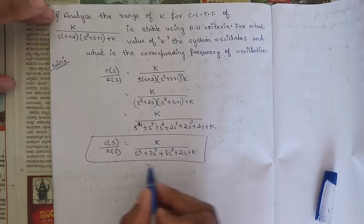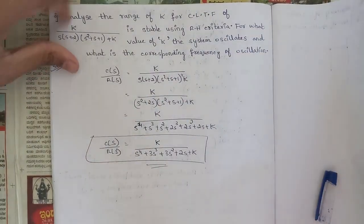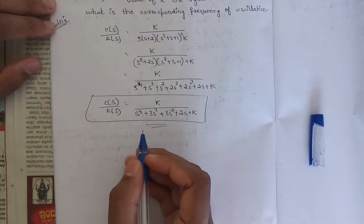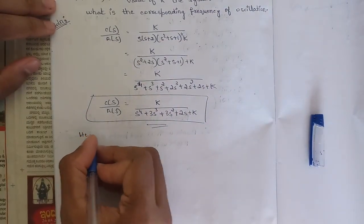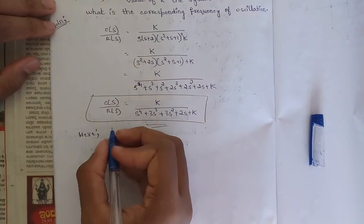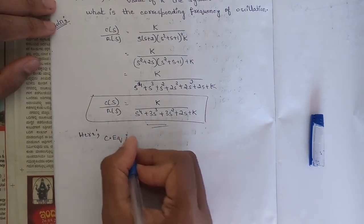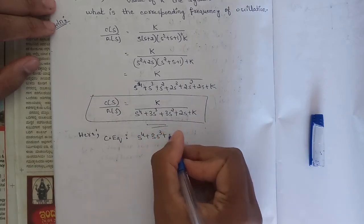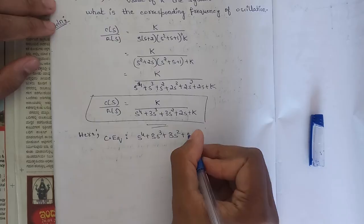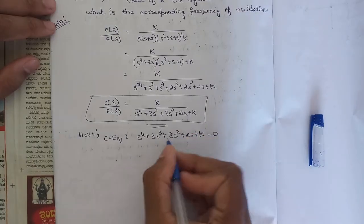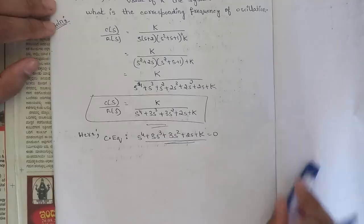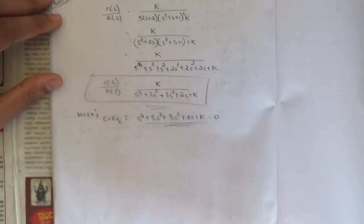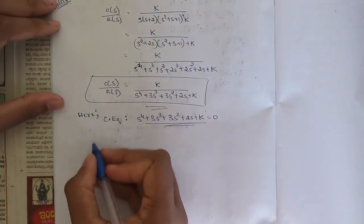After simplifying, we have a transfer function with denominator s⁴+3s³+3s²+2s+k. Now write the characteristic equation, which is always the denominator set to zero: s⁴+3s³+3s²+2s+k = 0. Now apply the Routh array.